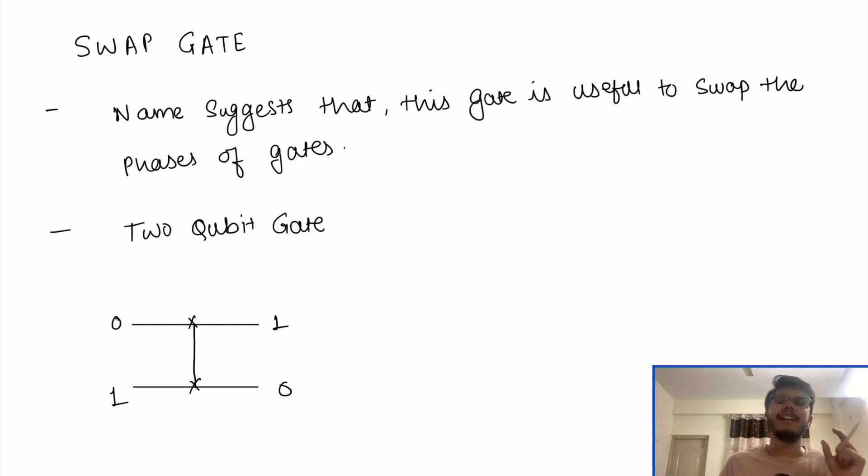So, the swapping has a very crucial role in mathematics or in any particular algorithm as well. That's why the swap gate, although it is very small, it is very useful.